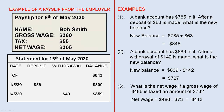Let's look at an example of a payslip from the employer. Here we have a payslip for the 8th of May 2020. The name of the employee is Bob Smith. The gross wage is $360 — that's the money earned before tax. The tax is $55, which is the money taken by the government. The net wage, which is the money you actually take home, is $305. A very basic payslip, but that gives you an idea.